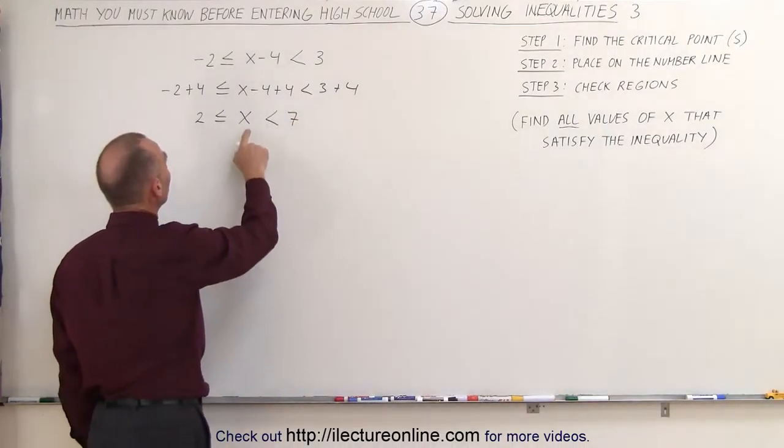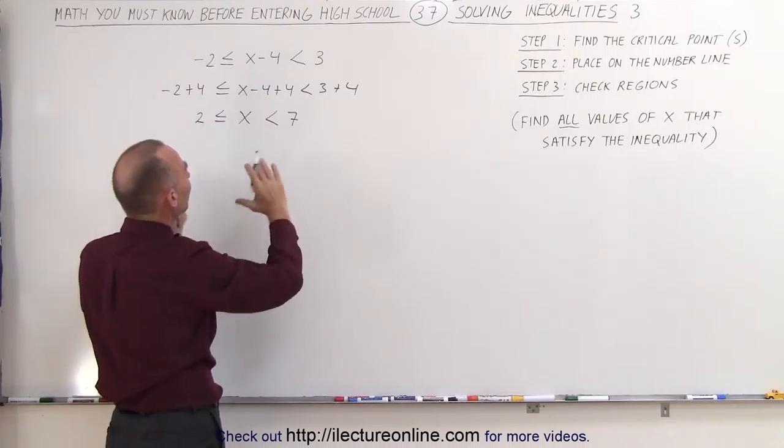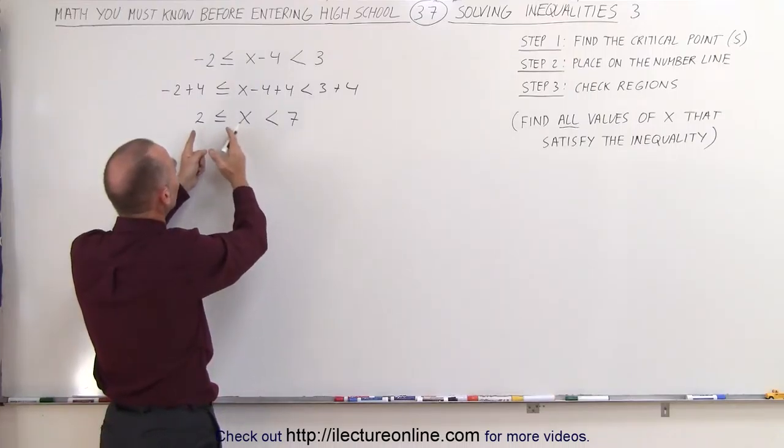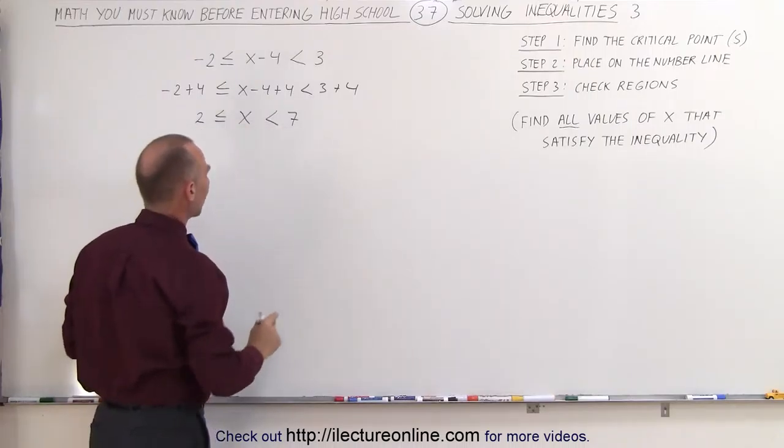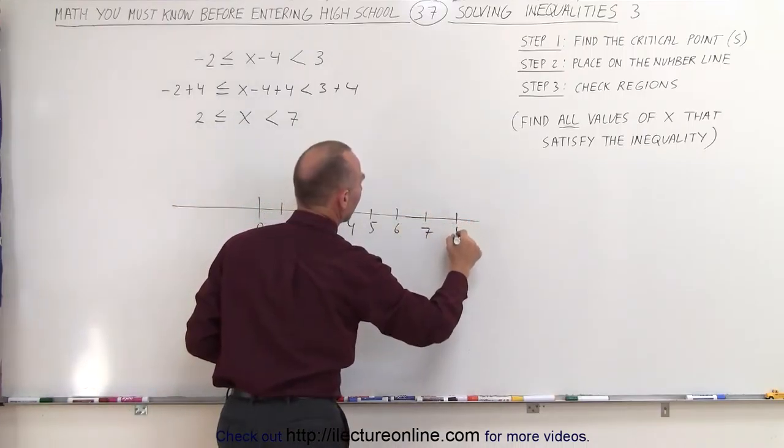What we need to do now is we can skip the next step because we found the critical points. We know the values of x must be between these values, so if we draw a number line, and here we have the number 0, 1, 2, 3, 6, 7, and 8.